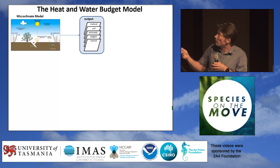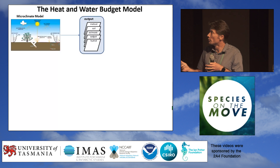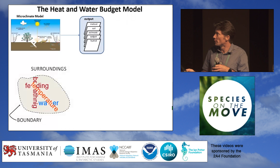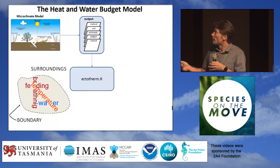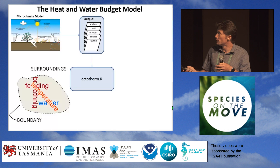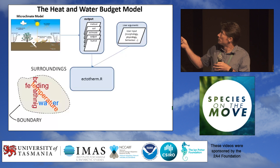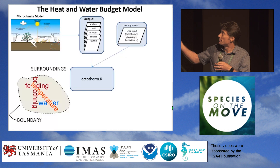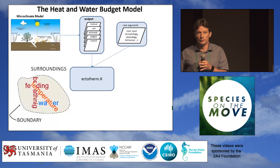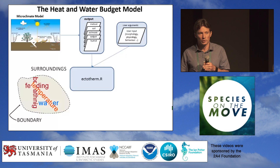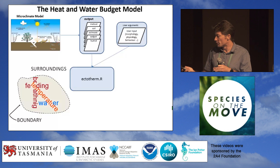That is the microclimate model, and that may be all you need for your particular research problem. Or you may want to make a calculation about the energy and mass budget of an actual organism. Currently in the NicheMapper package we have a function for working with ectotherms — the endotherm model is in progress. You can input your morphology, physiology, and behavioural traits measured for your organism. It takes as input the output from the microclimate model for two different extremes of shade, then works out each hour where the organism could be, how deep underground it must go, how much shade it needs, what body temperature it would have, and how much water it would be losing.